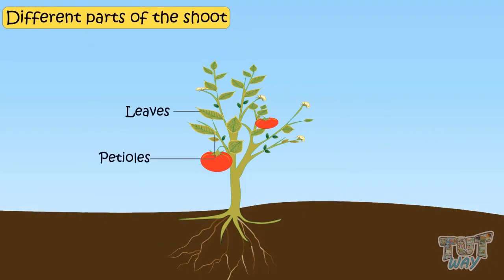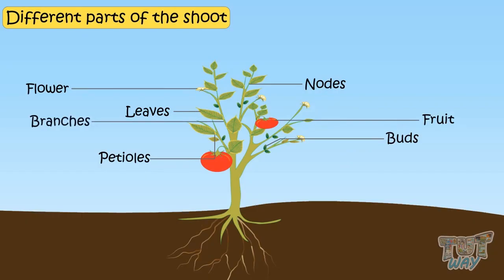Leaves, petioles, nodes, buds, flowers, fruits and branches are all different parts of shoot and each part plays a different role.